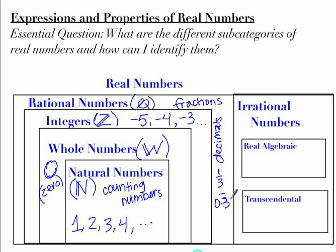Rational numbers also include any terminating decimal — something like one-half, or 0.5. Any negative fractions would also be in there, like negative three-fourths. So the rational numbers contain all of these things plus the negatives and the fractions.